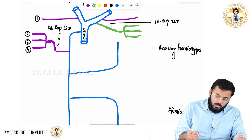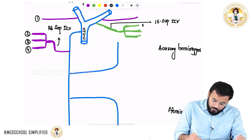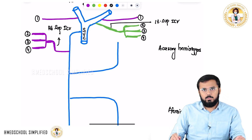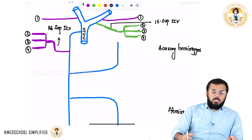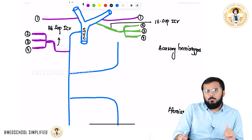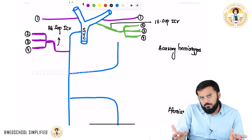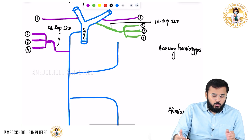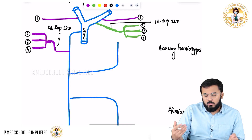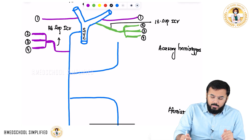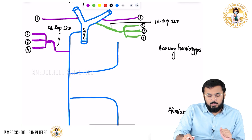To summarize: on the right side, the first posterior intercostal vein directly drains into the right brachiocephalic. On the left side, the first drains into the left brachiocephalic. The second, third, and fourth on the right form the right superior intercostal vein draining into the azygous. The second, third, and fourth on the left form the left superior intercostal vein draining into the left brachiocephalic — because there is no azygous on the left side.